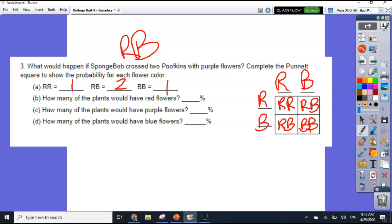So what percentage would be red? Well red is big R, big R. So we said there's one out of four. So what percentage is that? One out of four. 25%. How many would have purple? So purple is R, B. So two out of four or half is what percent? 50%. And what percentage would have blue flowers? One out of four, which is 25%.